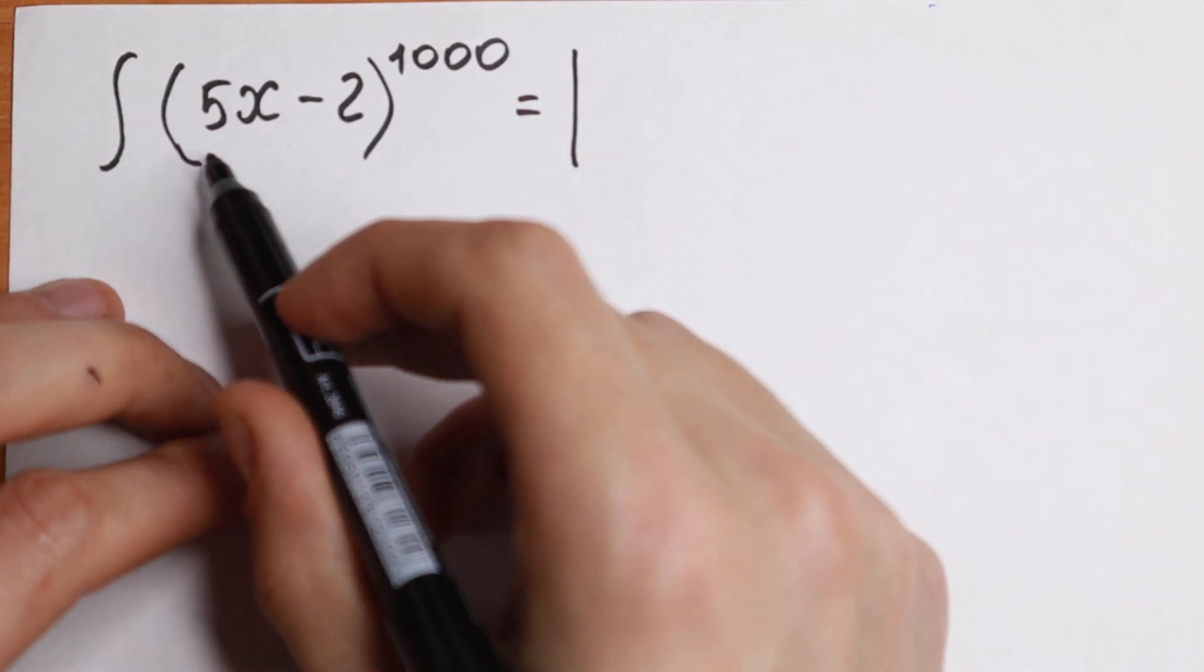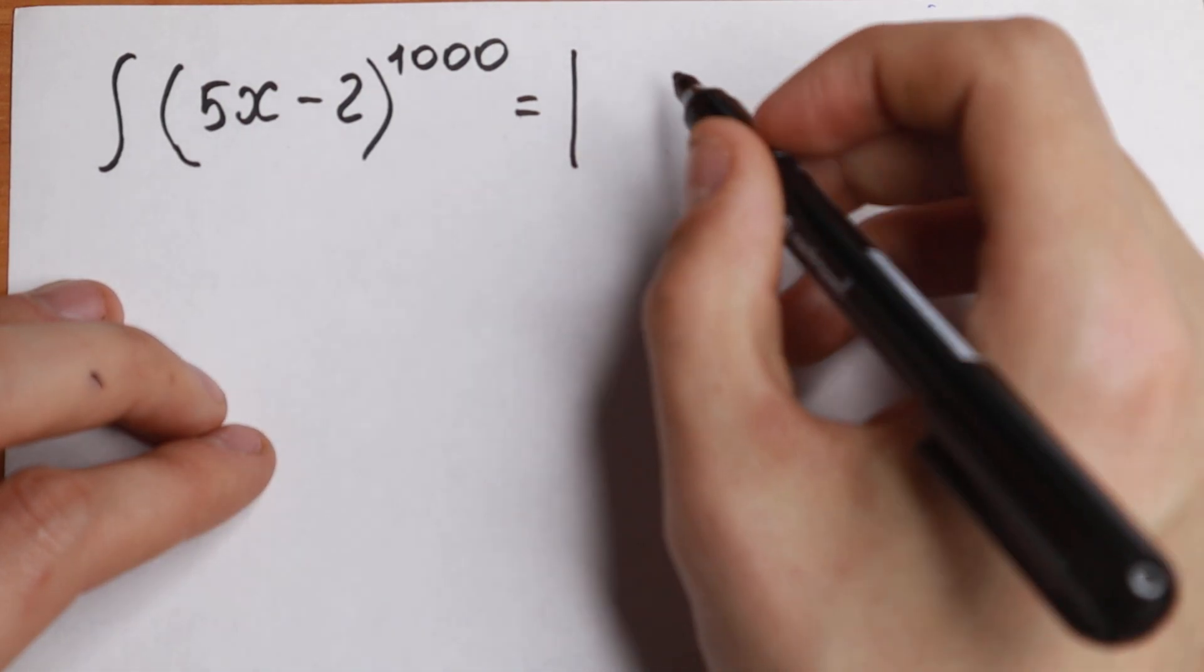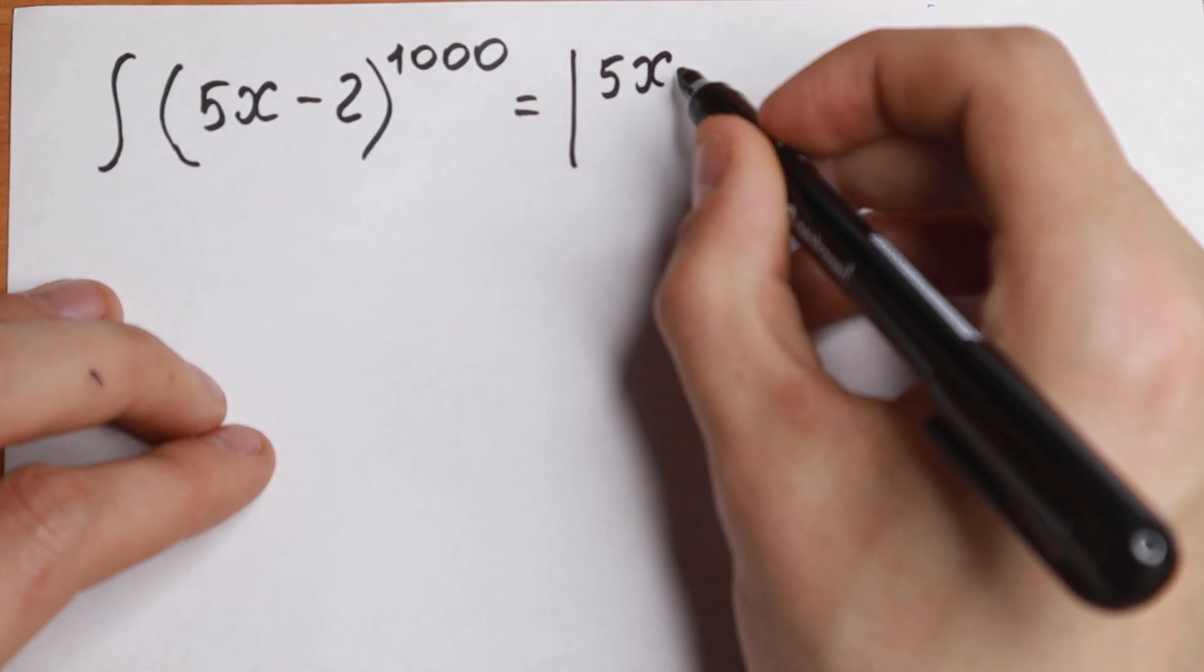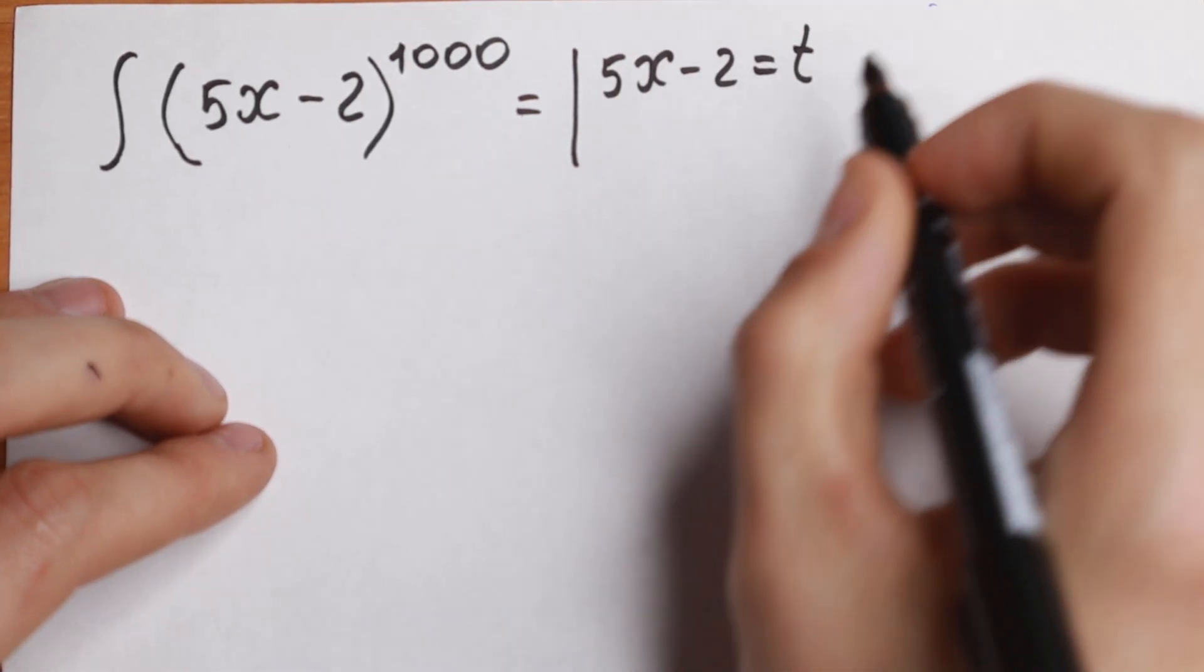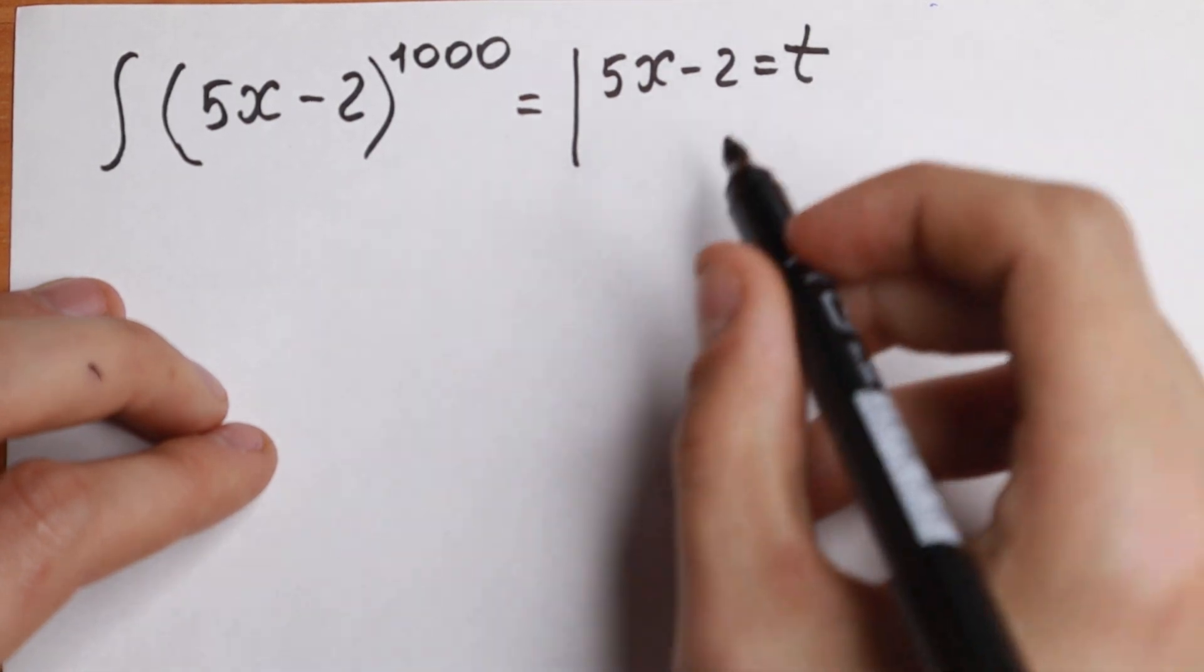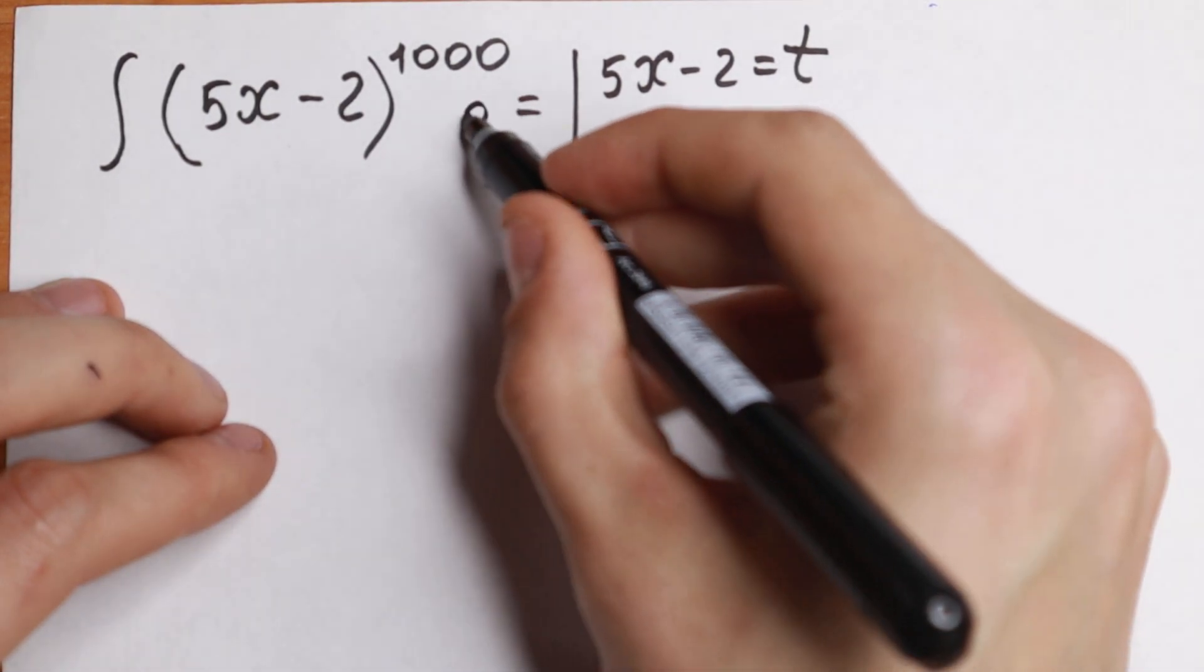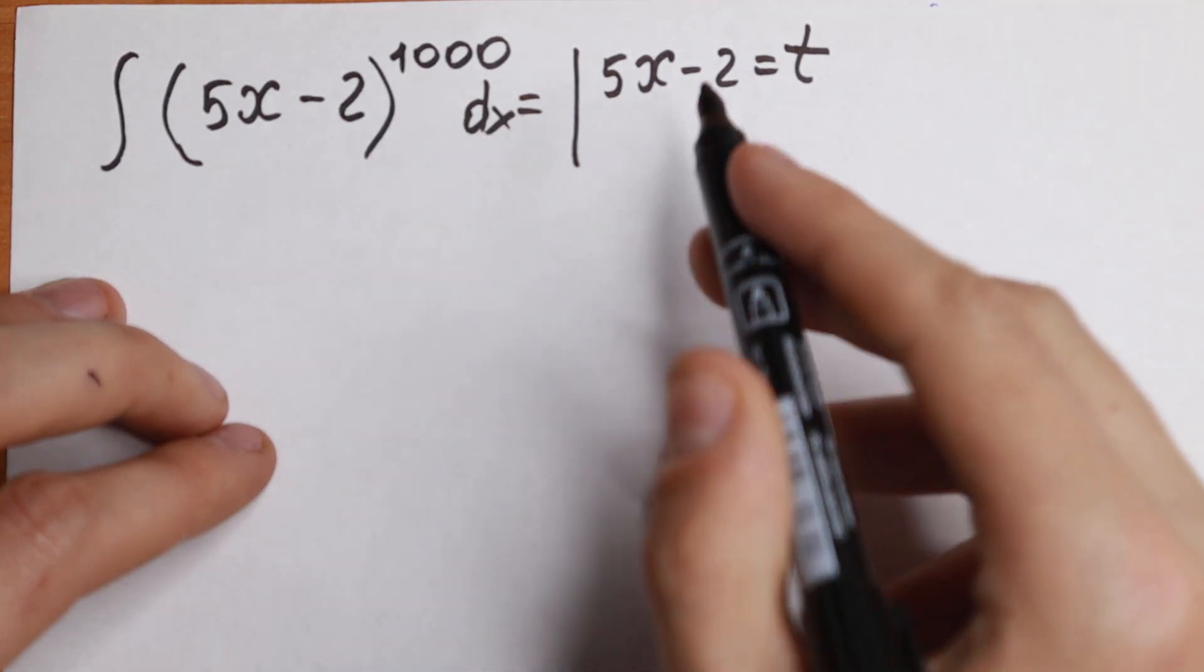First of all, we need to substitute this expression in our integral. So 5x minus 2 will be, for example, t. But if we work with t, we need to change. Right here we need dx. We need to find our dx.